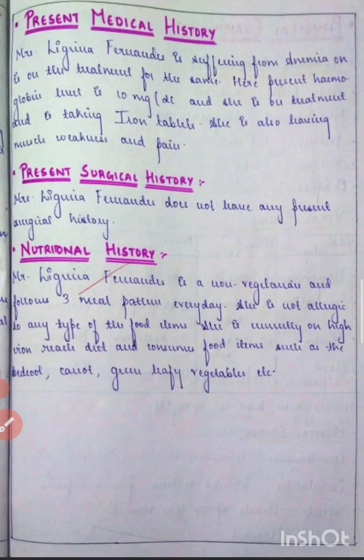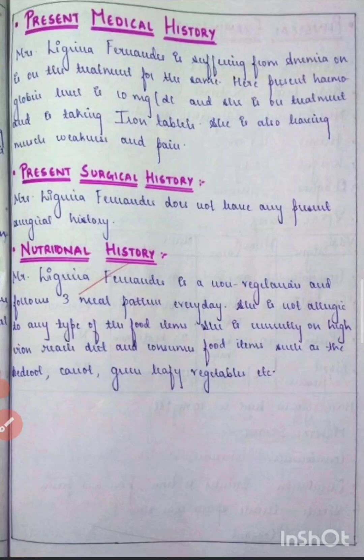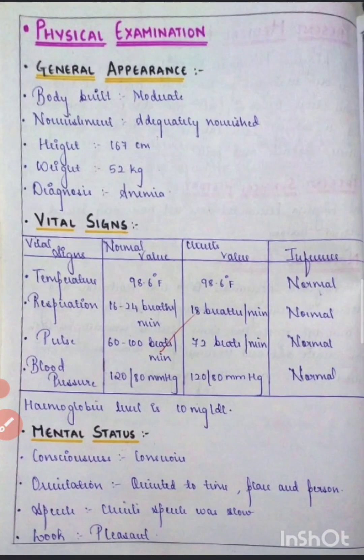The symptoms they are suffering from will also come here. Then comes the present surgical history, and then nutritional history — what they have consumed in their diet.